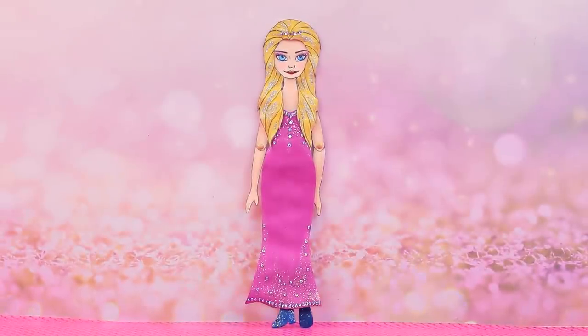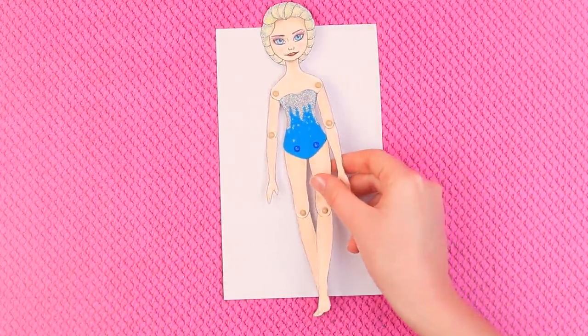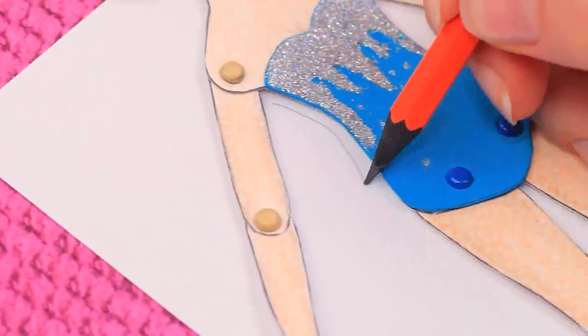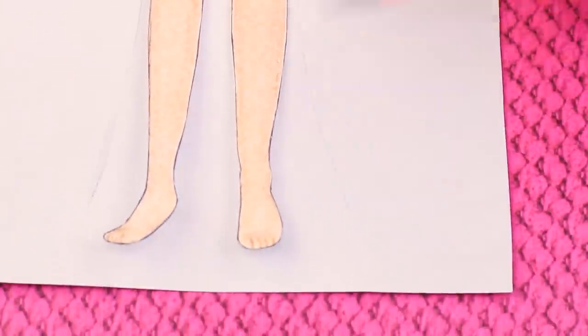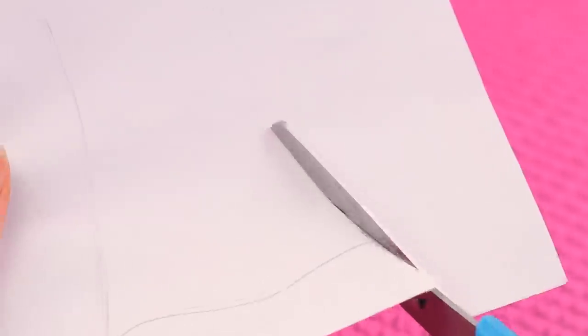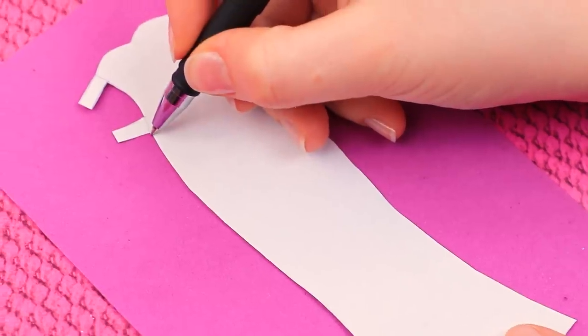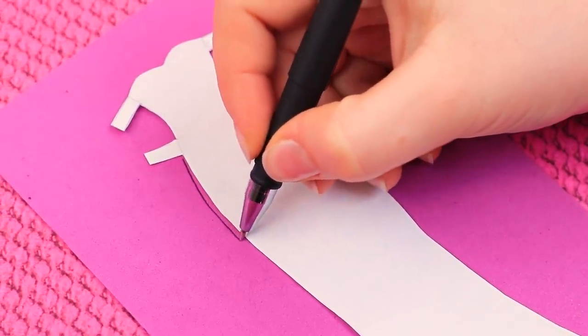Let's DIY another outfit for Elsa! Trace the silhouette of the princess on a sheet of white cardboard and draw a long dress. Don't forget to add fasteners and you can cut it out! Carefully trace the dress on pink foam paper without fasteners.